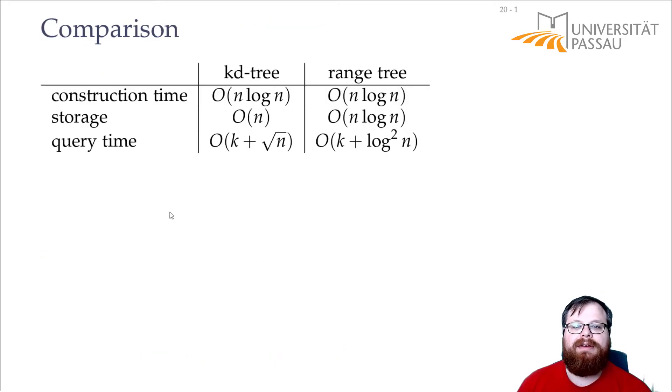So let's compare. We have the kd tree, and we have the range tree. For two dimensions, both of them have the construction time order of log n, or order of n log n. But kd trees have a smaller storage, they only need linear, while range tree need order of n log n storage. On the other hand, the query time with range trees is much better, because log squared is much smaller than square root of n.